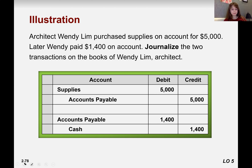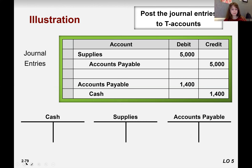Okay, let's move forward. Now that we know how to make a journal entry, let's post it into our T-accounts. When you post it, how many accounts do you need to create? We need to make three T-accounts: cash, supplies, and accounts payable.